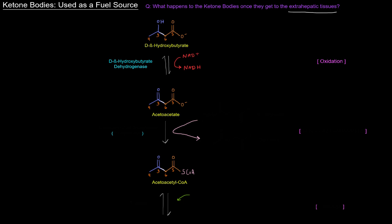And previously it was a reduction, but now we're moving towards, we're going in the opposite direction, so it's an oxidation. So now we have acetoacetate. What's going to happen to this acetoacetate? We're going to turn it into acetoacetyl-CoA. In order to do that, we're going to need to add a coenzyme A.